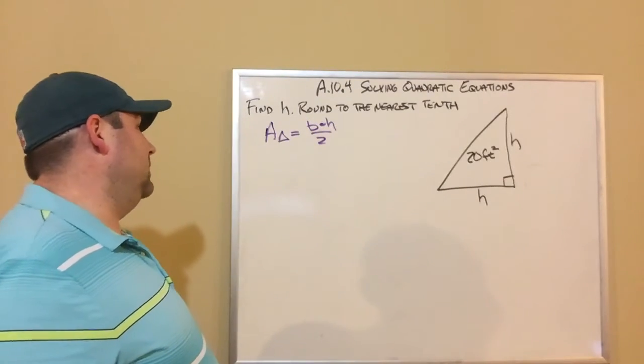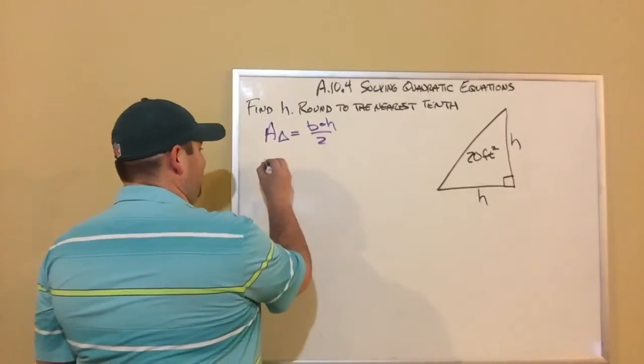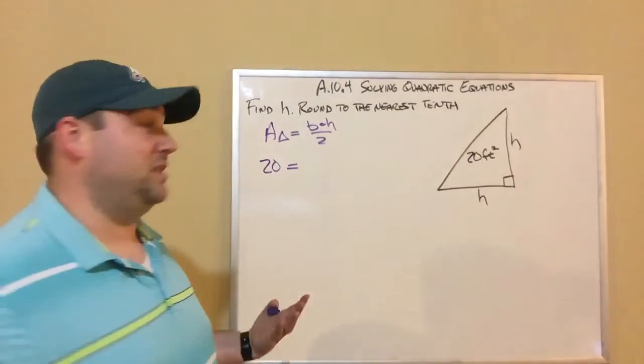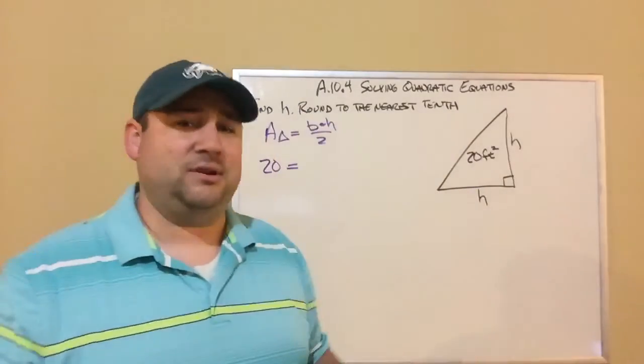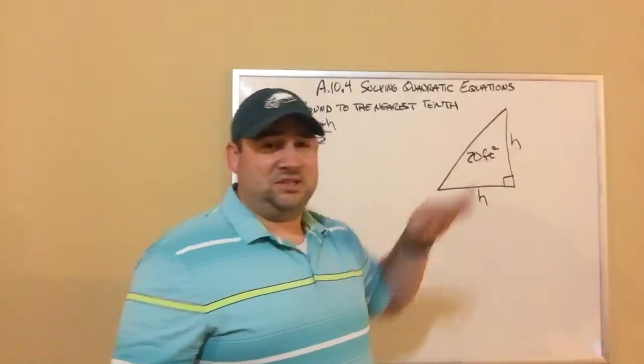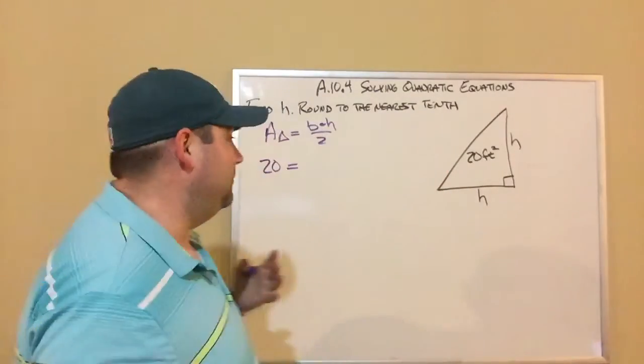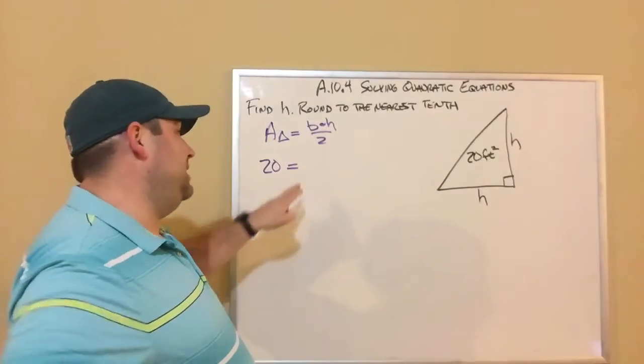So we're going to look at this one. Our area is 20 feet squared. So I'm going to plug that in into this equation for the area because it was given to us. It's 20 feet squared. Don't square the 20 and make it like 400 or anything like that. Feet squared is just a label. Square feet is just a label. It's not telling us to square anything. Then we've got H times H...